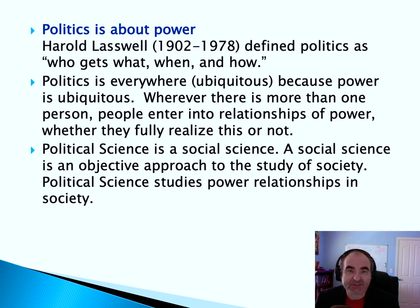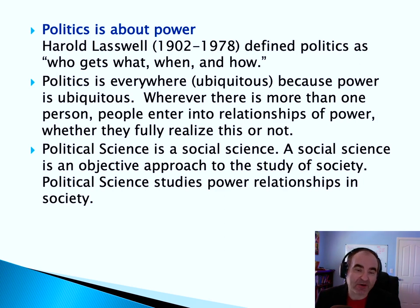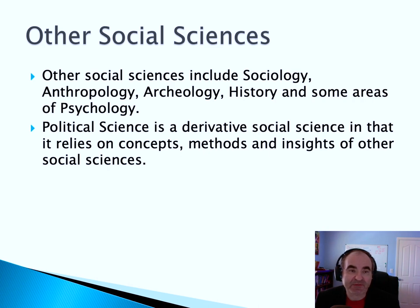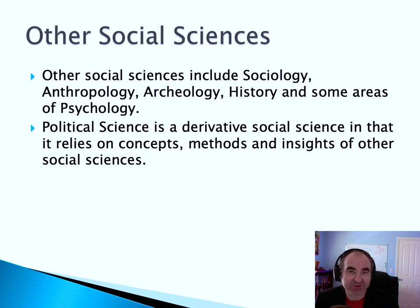Political science is a social science, and a social science is an objective approach to the study of society. Political science studies our relations in society. There are other social sciences, of course — they include sociology, anthropology, history, and even some areas of psychology. Political science is a derivative social science in that it relies on the concepts, methods, and insights of other social sciences.